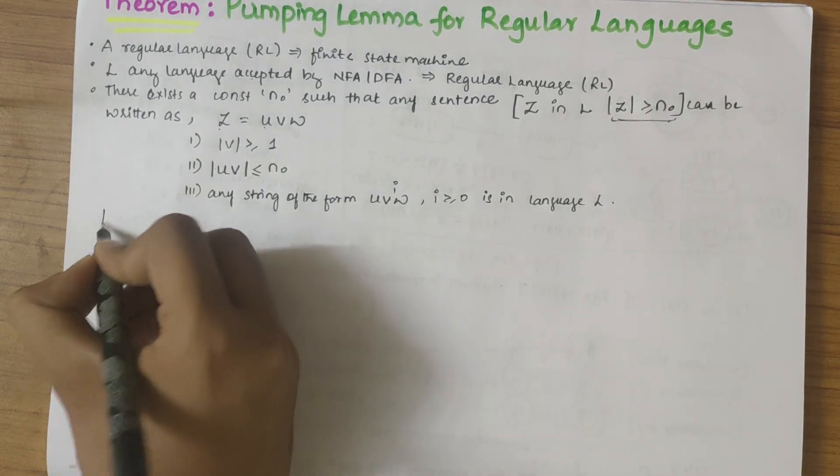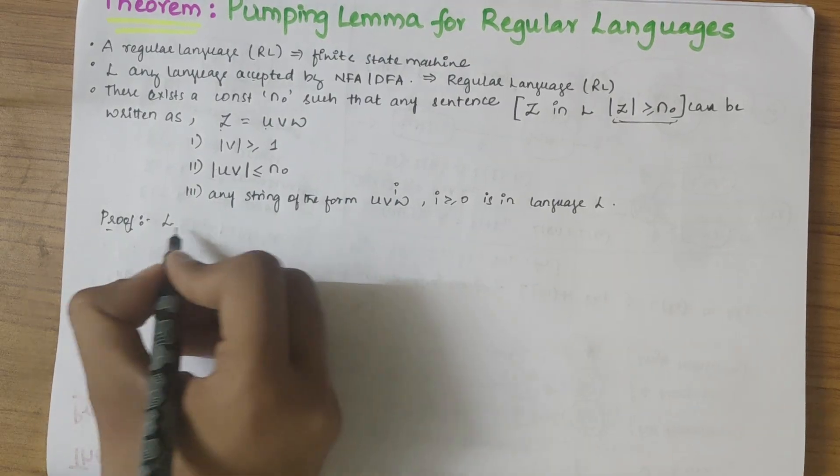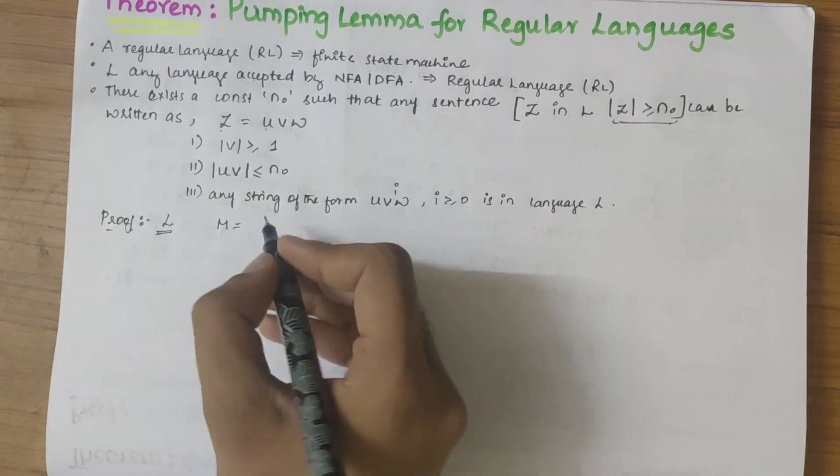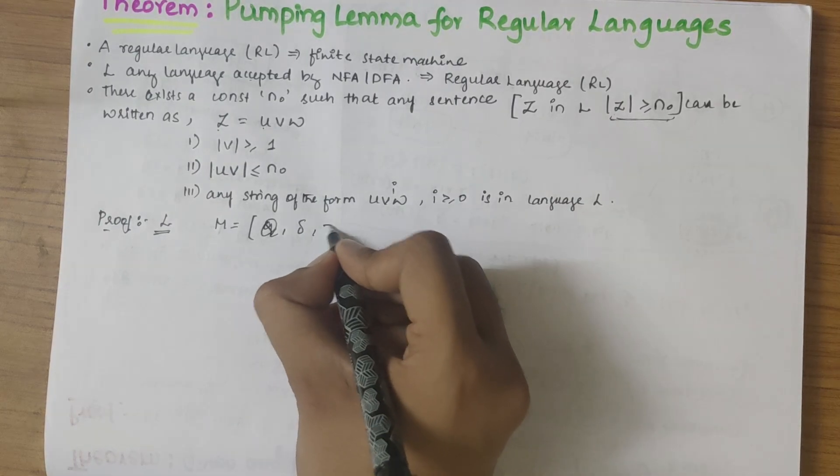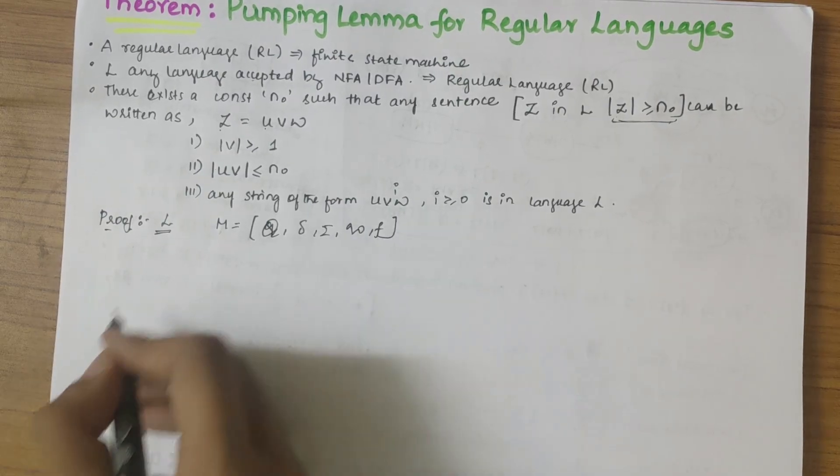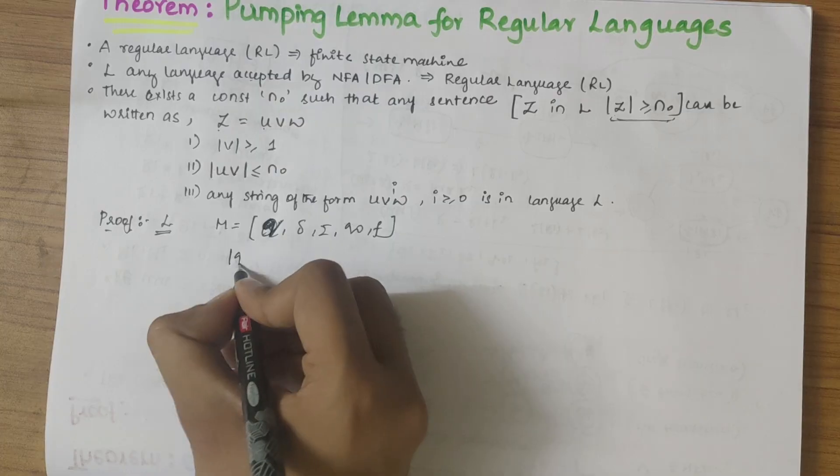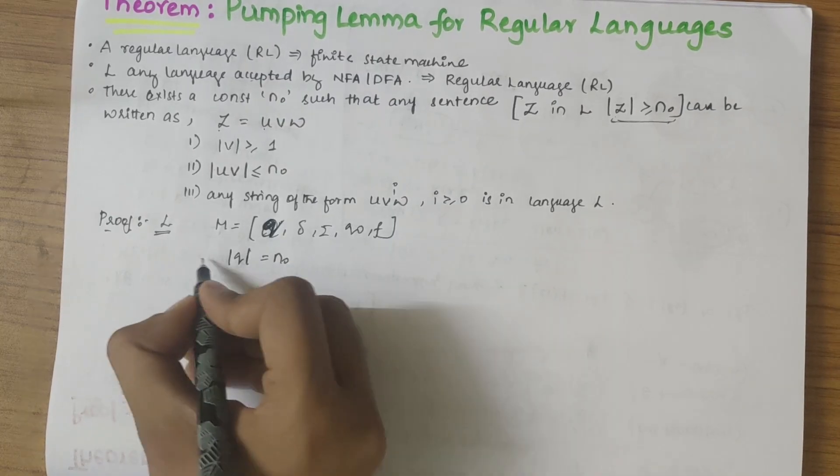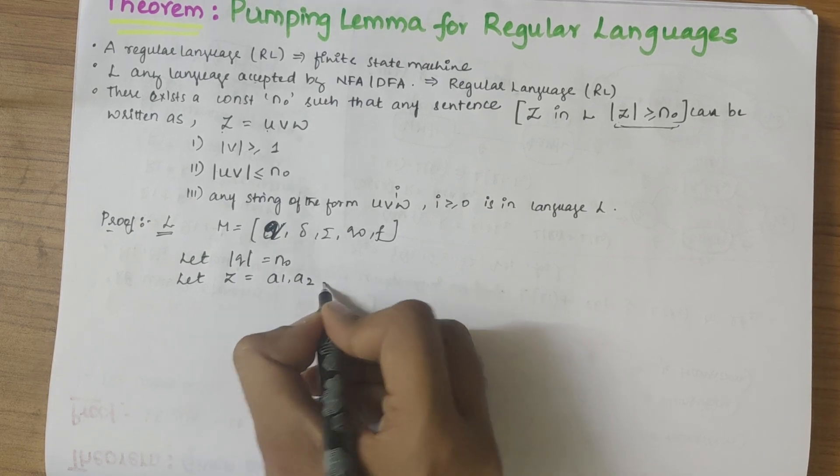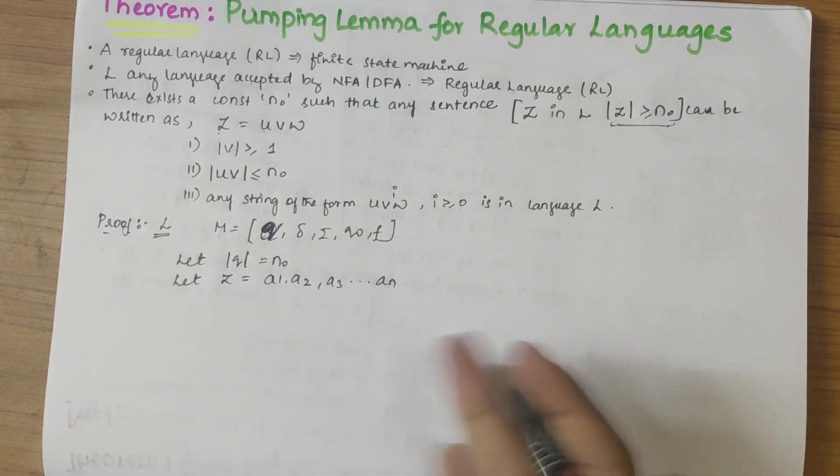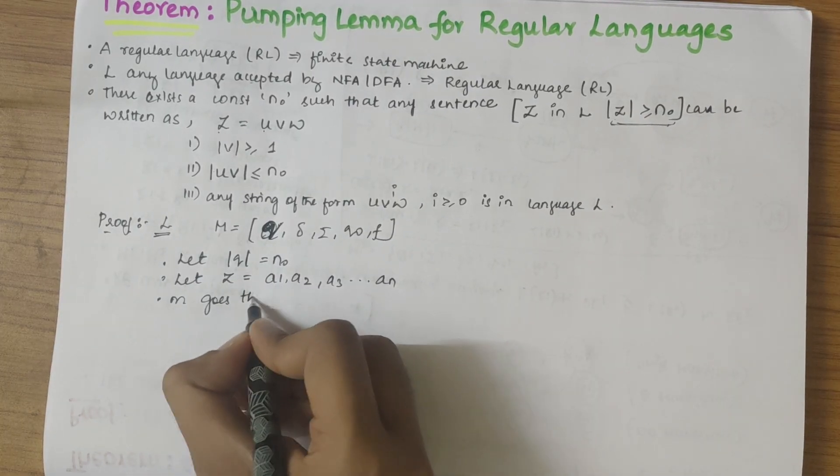Looking into the proof now, let L be a language that is accepted by DFA. Let's define the DFA. So here M is equal to Q, sigma, epsilon, q naught, and F. Here let mod of Q is equal to n0, and let z is equal to a1 a2 a3 and so on. Here a1, a2, a3 represent the symbols used. So here M goes through a sequence...